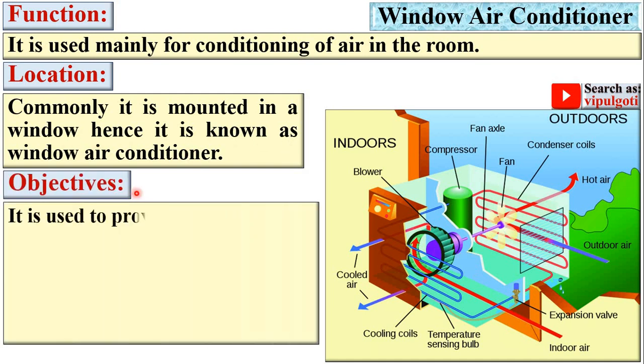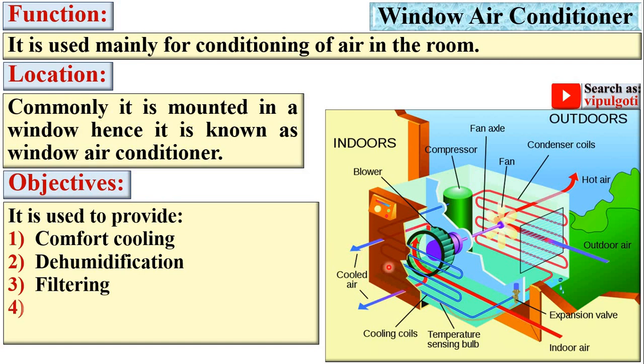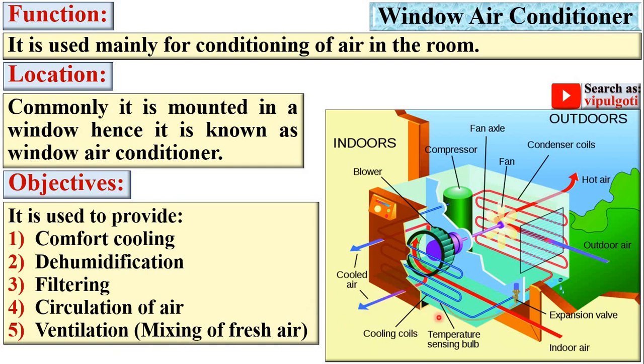Now objectives of the window air conditioner. It is used to provide comfort cooling, dehumidification, filtering, circulation of air, ventilation means mixing of fresh air.